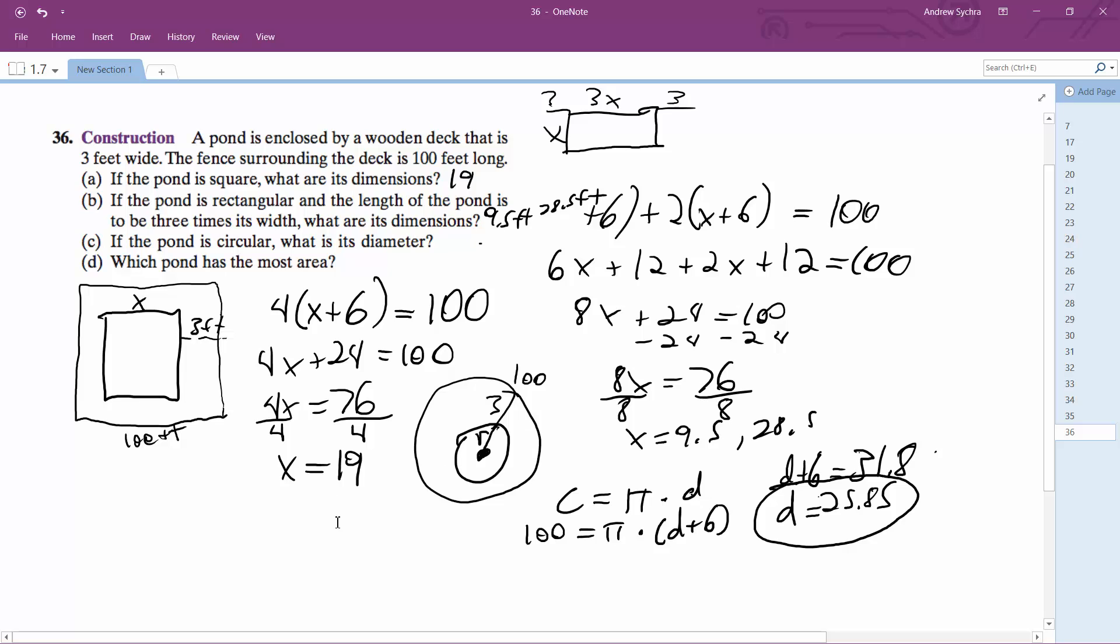Which pond has the most area? It's probably going to be the circular pond. So 19 times 19 is 361, 9.5 times 28.5 is going to be 270, and then this is going to be 525 roughly.